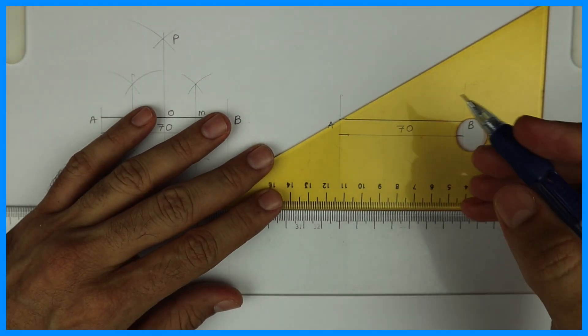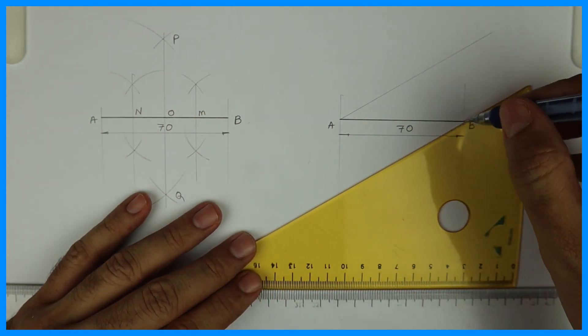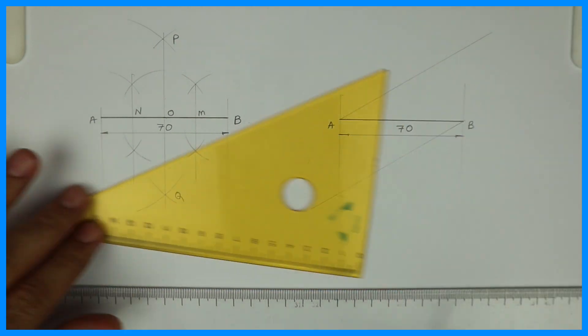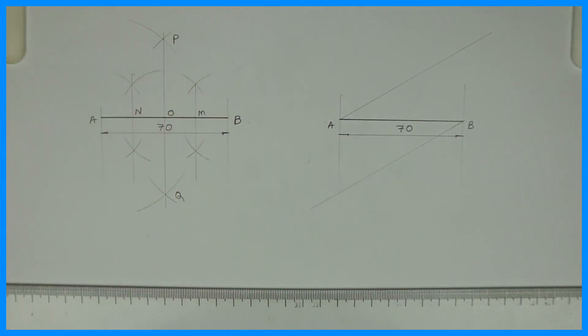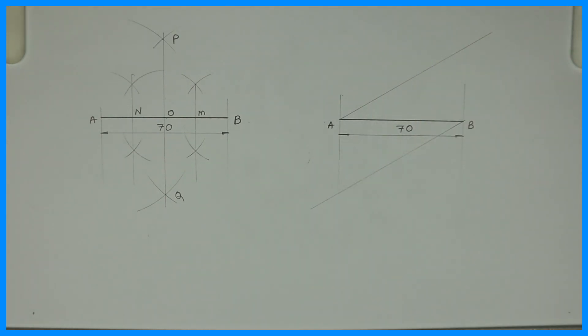Then you take 30 degree from A like this. With the help of set square you can take 30 degree like this. See this. This is 30 degree upward as well as downward.